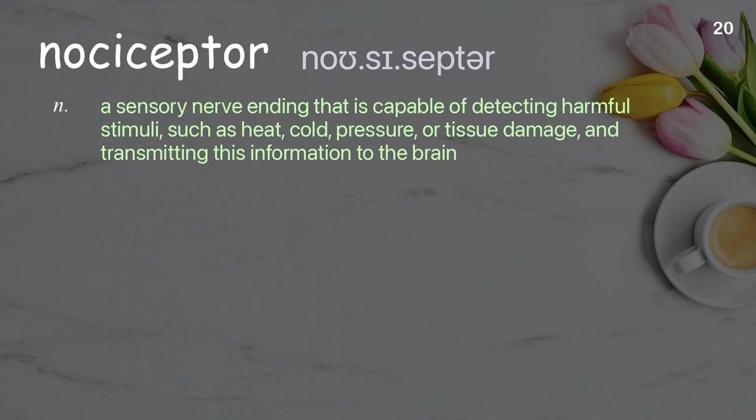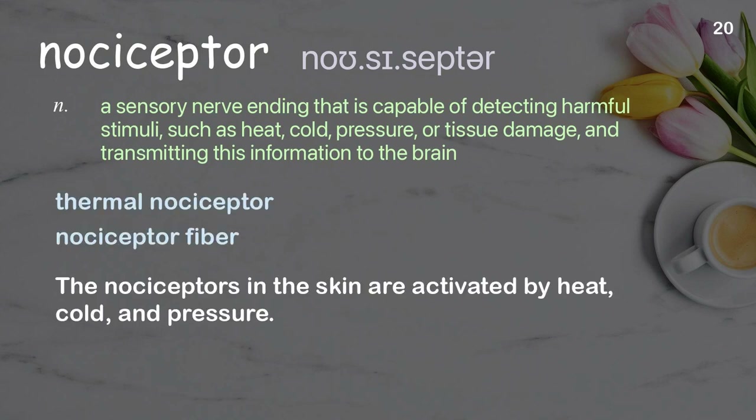Nociceptor: a sensory nerve ending that is capable of detecting harmful stimuli such as heat, cold, pressure, or tissue damage, and transmitting this information to the brain. Examples: Thermal nociceptor. Nociceptor fiber. The nociceptors in the skin are activated by heat, cold, and pressure.